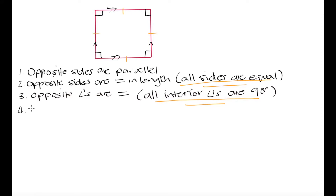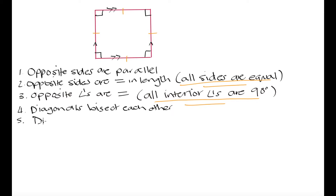In parallelograms our diagonals bisect each other, and this is also going to be true for our squares — our diagonals will bisect each other. Then we saw that in the rhombus the diagonals bisect at 90 degrees. This was just proven in our last video and this is also going to apply to the square. If you need a proof, refer to the last video where we proved that in a rhombus diagonals bisect at 90 degrees.